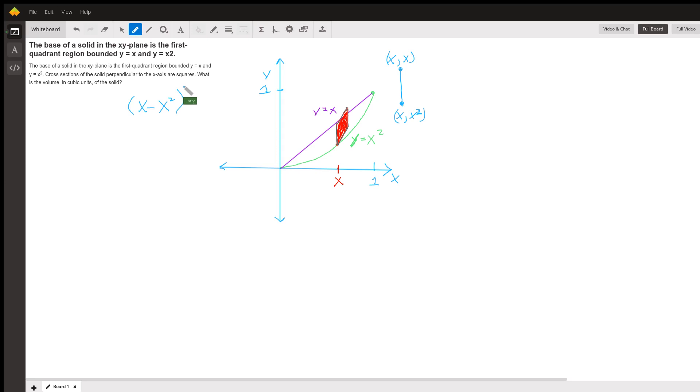So the area of the square is that squared. And if we look at this little sliver of the solid, the thickness of that sliver is dx. So the volume of this little sliver of our solid is x minus x squared squared dx.